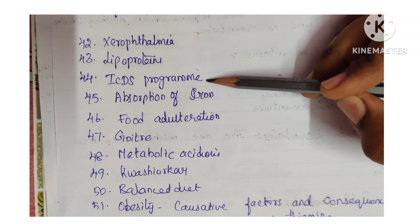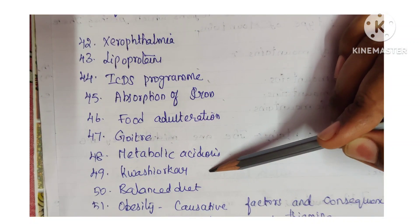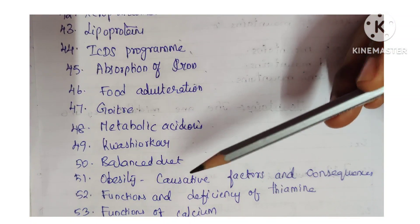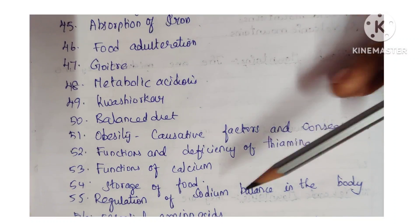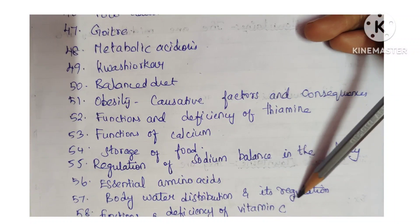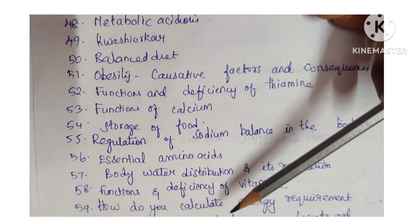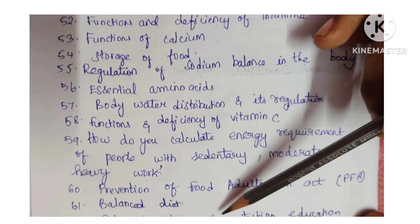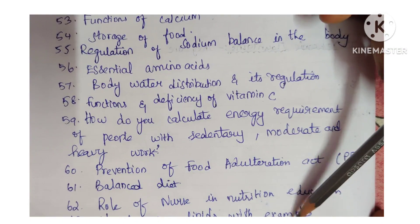Additional Nutrition topics: Xerophthalmia, Lipoproteins, ICDS Program, Absorption of Iron, Food Adulteration, Goiter, Metabolic Acidosis, Kwashiorkor, Balanced Diet, Obesity — its causative factors and consequences, Functions and Deficiency of Thiamine, Functions of Calcium, Storage of Food, Regulation of Sodium Balance in the Body, Essential Amino Acids, Body Water Distribution and Dysregulation, Functions and Deficiency of Vitamin C, How to Calculate Energy Requirement for people with Sedentary, Moderate and Heavy Work, Prevention of Food Adulteration Act, Balanced Diet, Role of Nurse in Nutrition Education, Classify the Lipids with Examples, and Digestion of Carbohydrates.